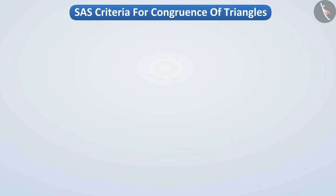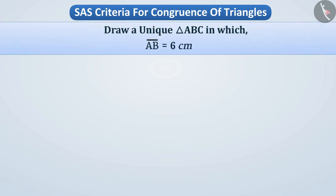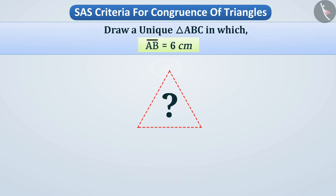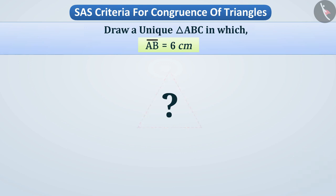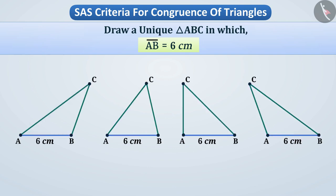Suppose we want to draw a triangle ABC where the length of AB is equal to 6 cm. By knowing the length of one side only, will you be able to draw a unique triangle ABC? We can draw different types of triangle ABC, but we cannot get a unique triangle ABC.